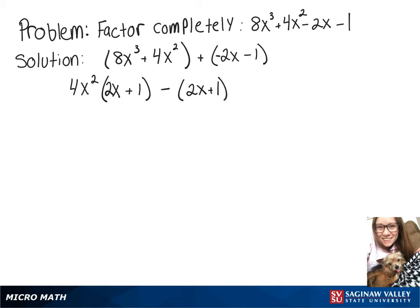And now, since each of those terms has a 2x + 1, we can factor out 2x + 1. Then we're left with what we took out to begin with, which is 4x² - 1.